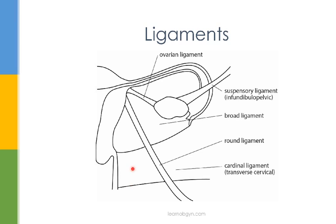Next we have the cardinal ligament, also called the transverse cervical ligament. They are below the broad ligament and connect the lateral vagina and cervix to the pelvic side wall. This ligament contains the uterine artery and uterine veins. In surgery, it's always important to remember that the ureter passes posteriorly to the uterine artery. A common mnemonic used is 'water passes under the bridge' — in this case, urine is water and blood is the bridge.